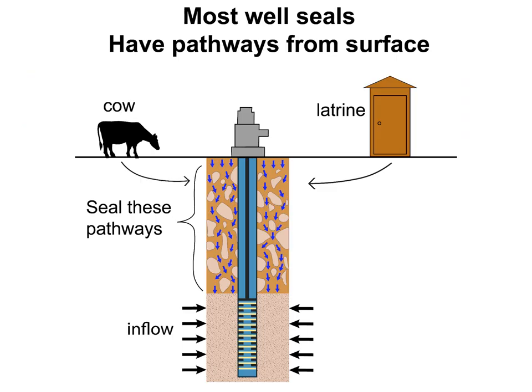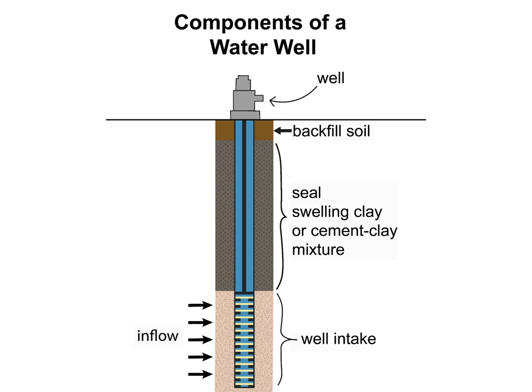Most well seals have pathways from the surface because they are so difficult to make properly. The components of a water well, if it's properly built, include a seal formed of swelling clay or a cement-clay mixture — not pure cement or concrete, because cement deteriorates over time.